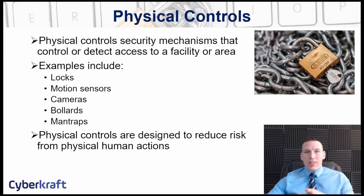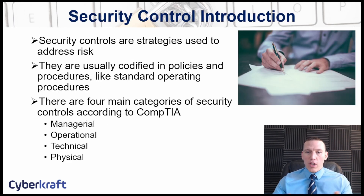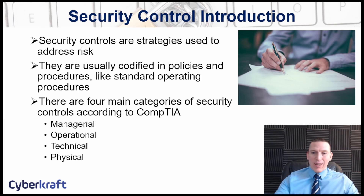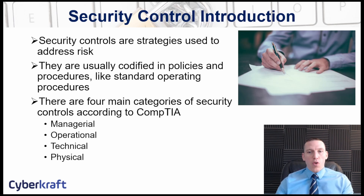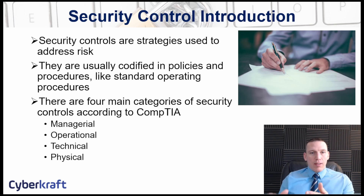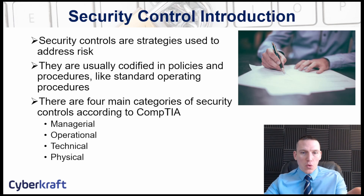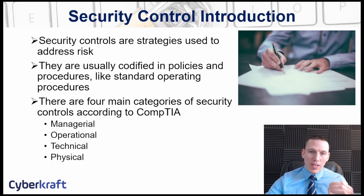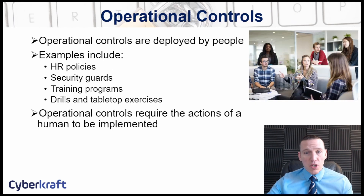These are the four security control classifications that CompTIA uses. A lot of organizations don't think about it this way — they'll classify controls into different control families. Frameworks like the NIST framework used by the federal government have multiple control families such as access control, media protection, physical security, and information assurance. For the CompTIA exam, you need to memorize the key indicators of these four controls.